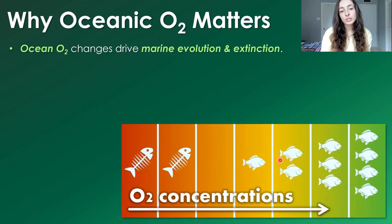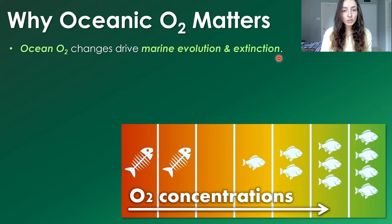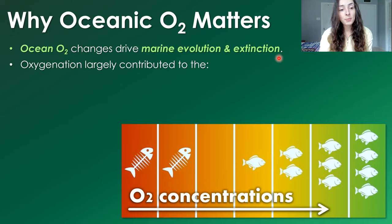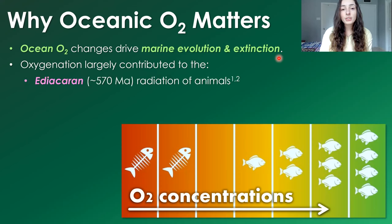Changes in oceanic oxygen concentrations drive marine evolution and extinction, or at least have driven very major evolutionary and extinction events throughout Earth's history. If you want to learn more about the control of oxygen on marine life, I talk a lot about how oxygen has affected animal evolution and diversification in the linked video. Some examples of events that oxygenation increases have contributed to include the Ediacaran radiation of animals just before the Cambrian explosion, around 570 million years ago.